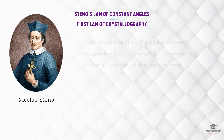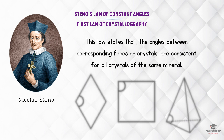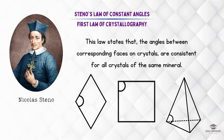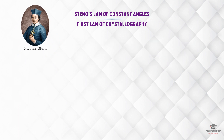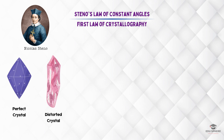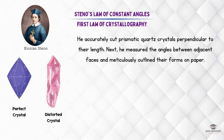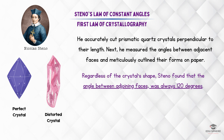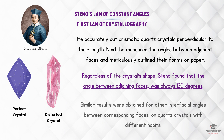This law states that the angles between corresponding faces on crystals are consistent for all crystals of the same mineral. To illustrate this, Steno examined the interfacial angles in various quartz crystals, including both perfect and distorted crystals. He precisely sliced prismatic quartz crystals at right angles to their length, then measured the angles between adjoining faces and carefully traced their shapes onto paper. Regardless of the crystal's shape, Steno found that the angle between adjoining faces was always 120 degrees. Similar results were obtained for other interfacial angles between corresponding faces on quartz crystals with different habits.